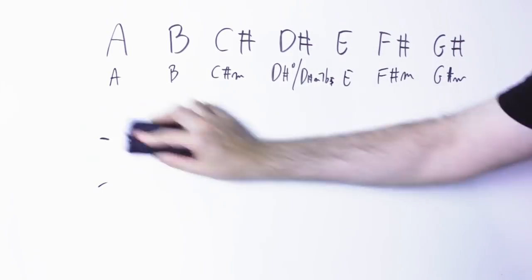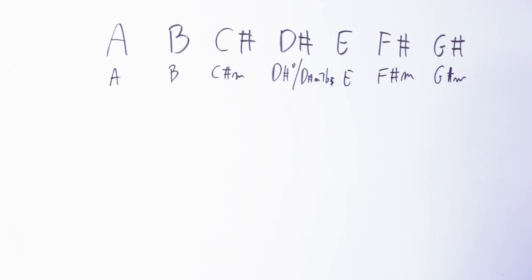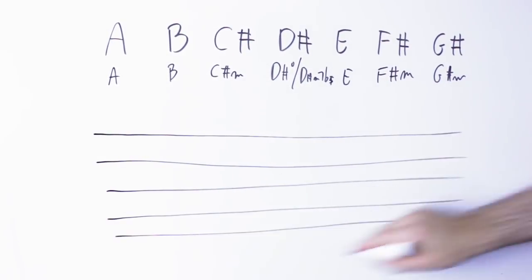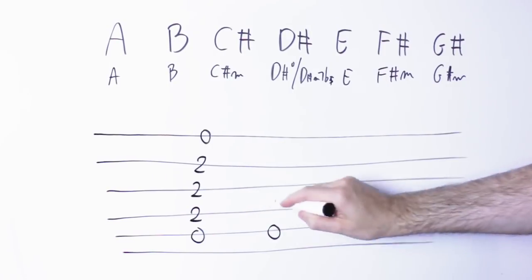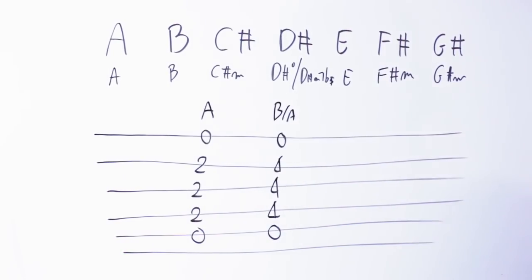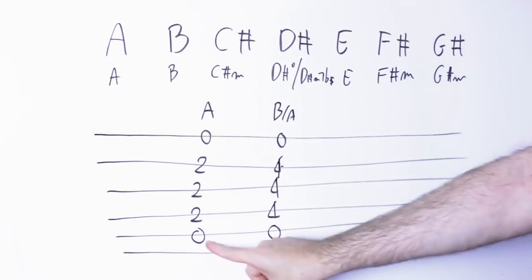Now here are a couple of super typical chord progression in A Lydian. The first chord progression is just A and B, and I'm gonna hold the A note at the bass to make sure you hear that as the root.